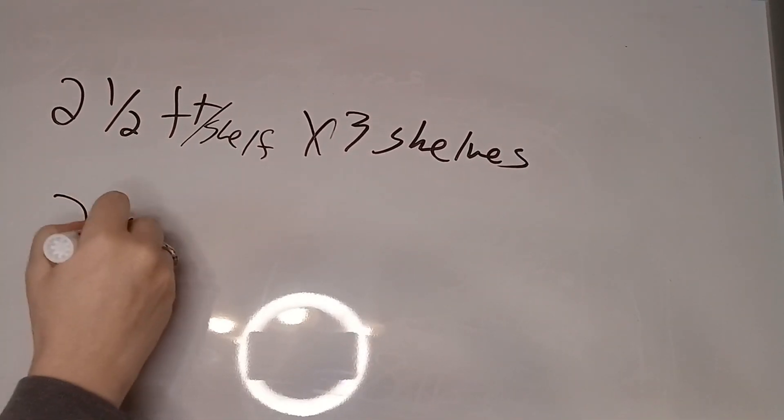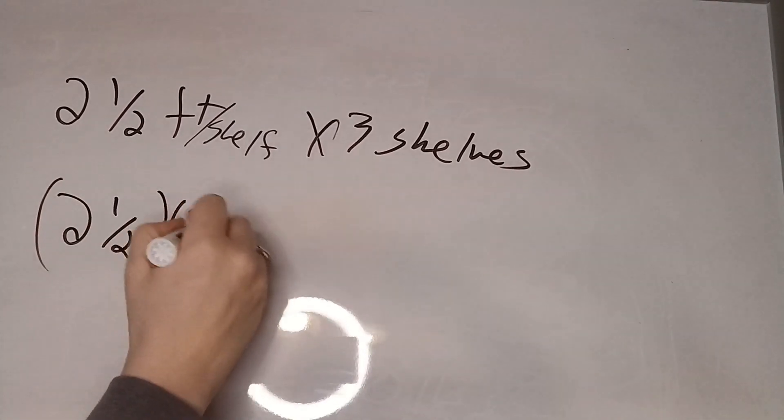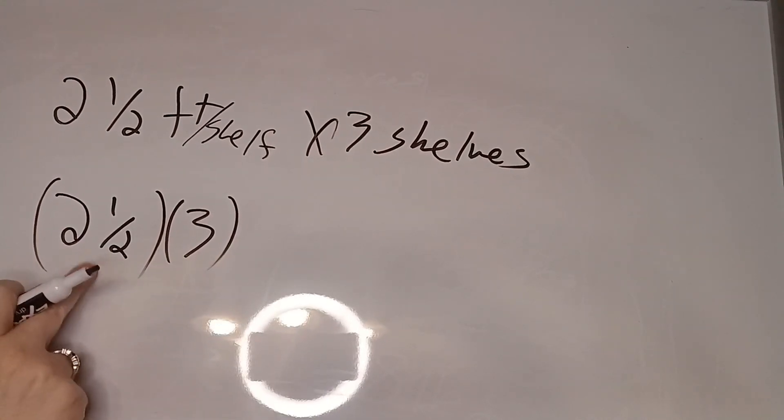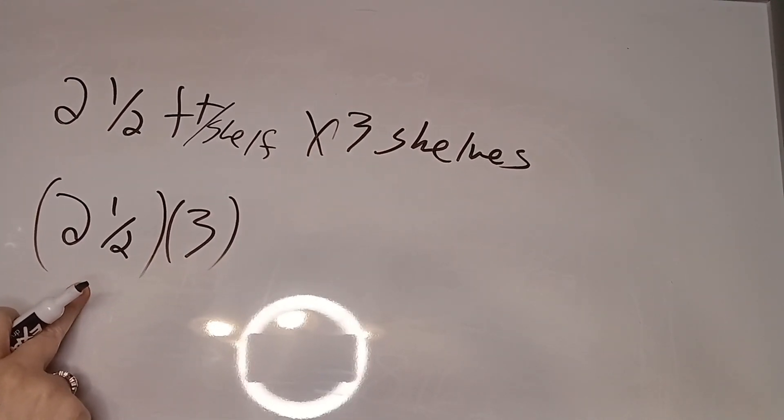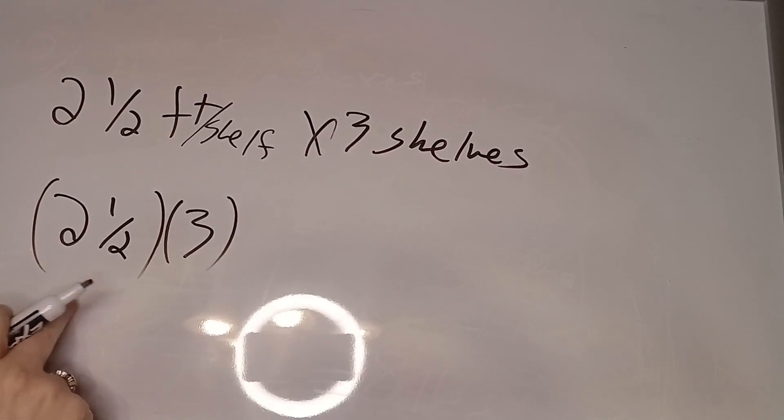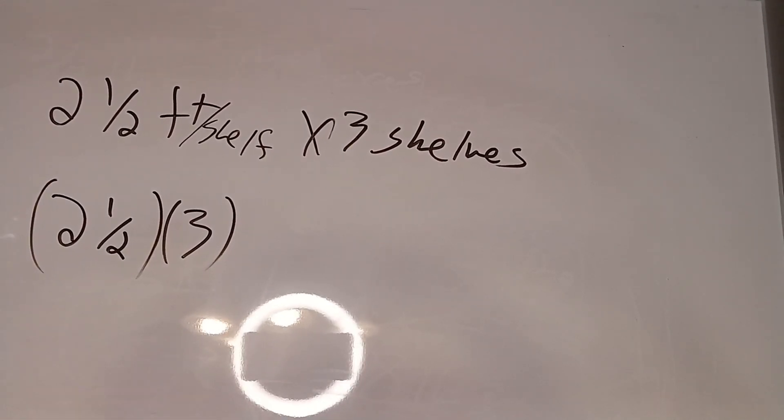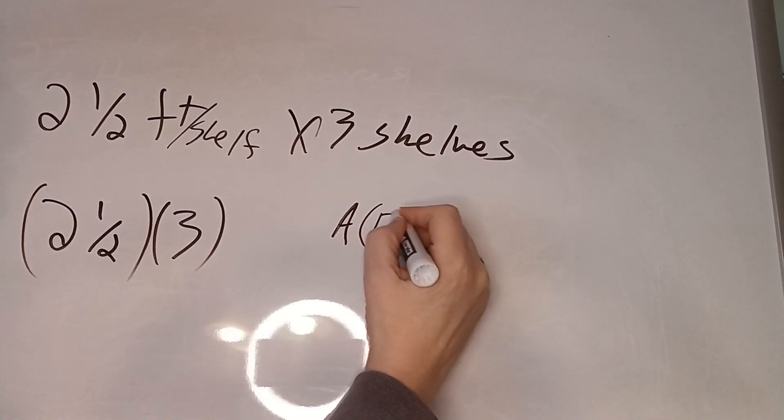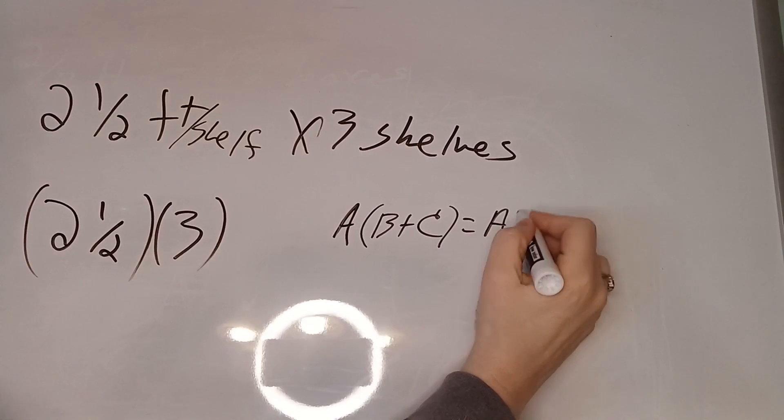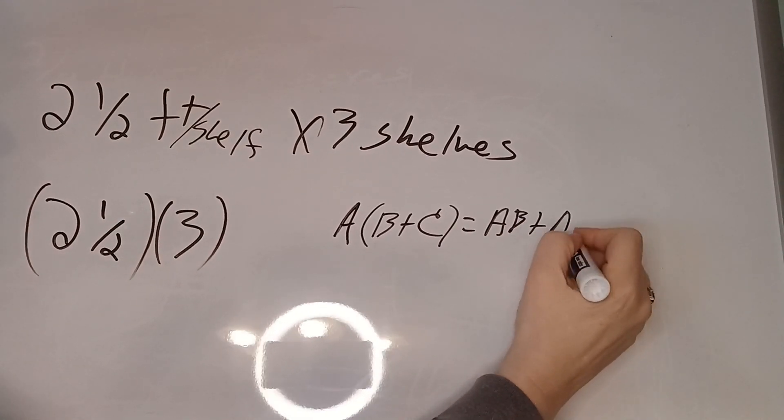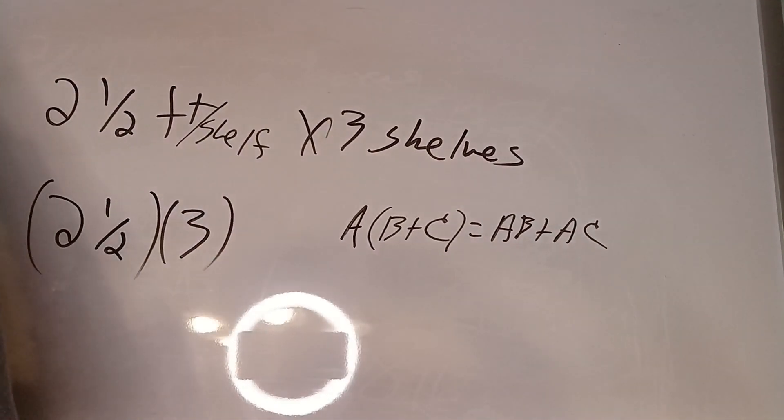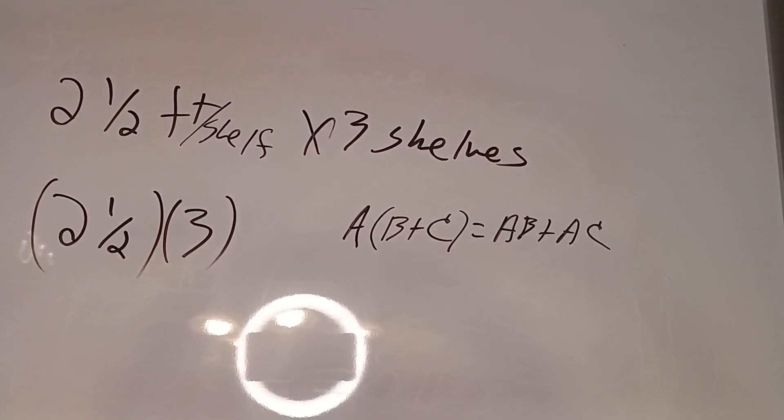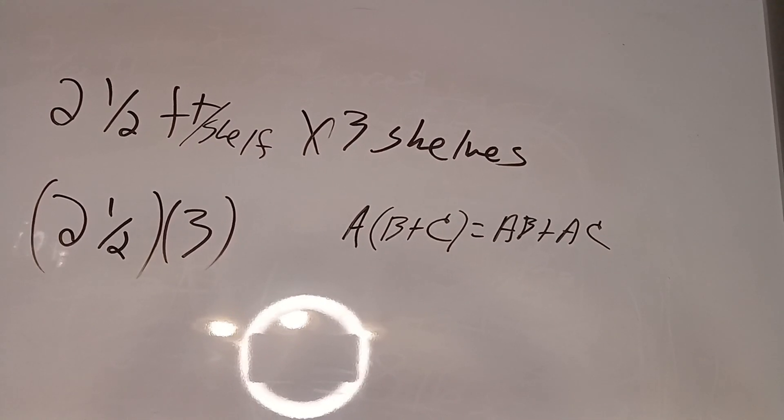So we have two and a half times three. One thing you can do when you have a whole number and you're multiplying by a mixed number is to split it up. Okay, there's a math thing that goes a times b plus c equals ab plus ac. That's well and good and most people remember seeing that in their math class, but nobody's ever taught what to do with it, right?